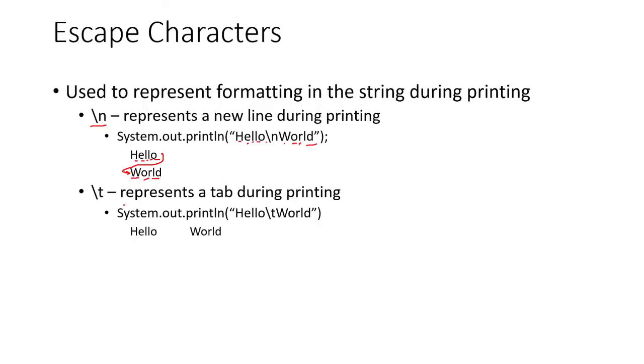So slash t does something similar. It represents a tab during printing. Just like how you would hit tab in a Word document, you can print out a tab just using slash t. So as you can see, 'hello slash t world' returns hello tab space and then world.